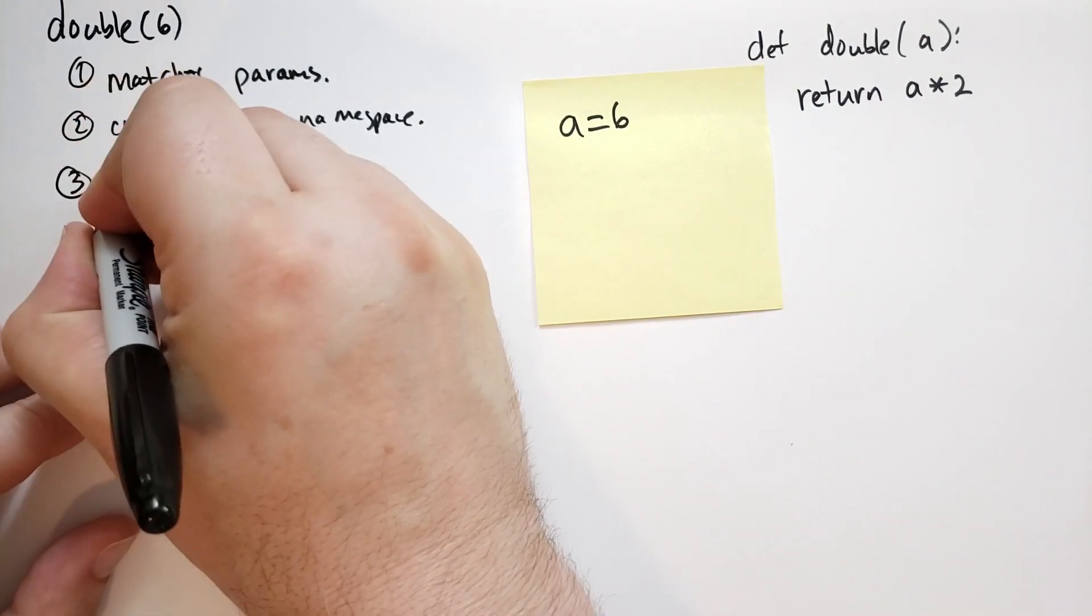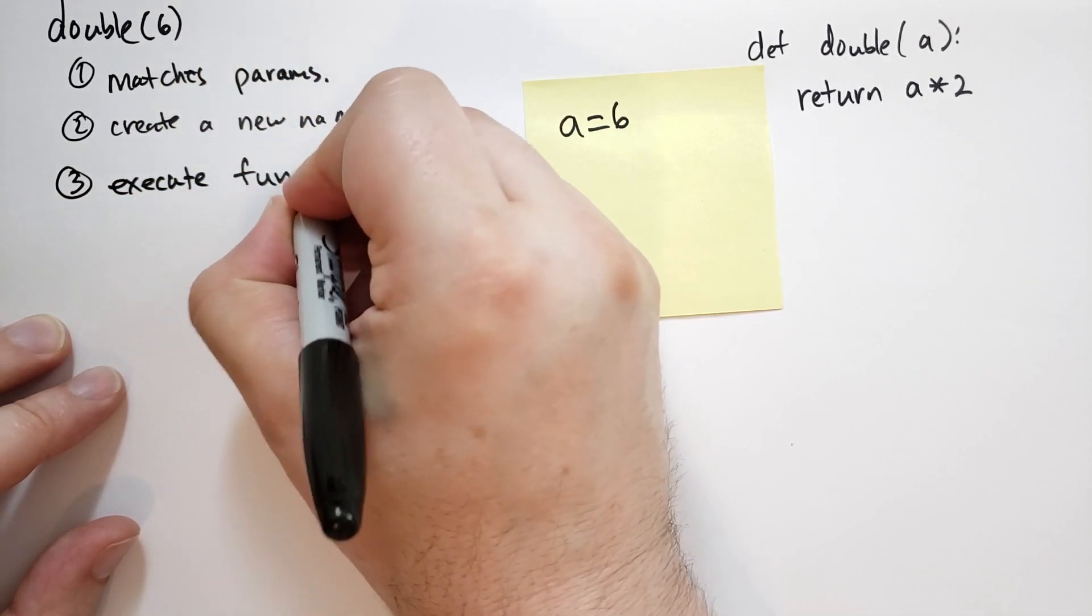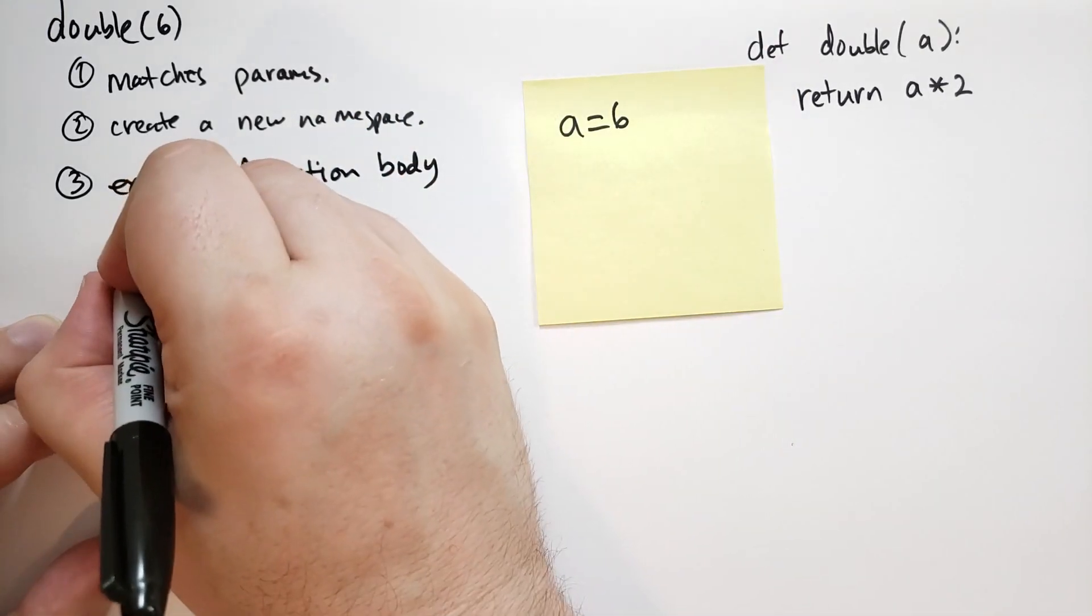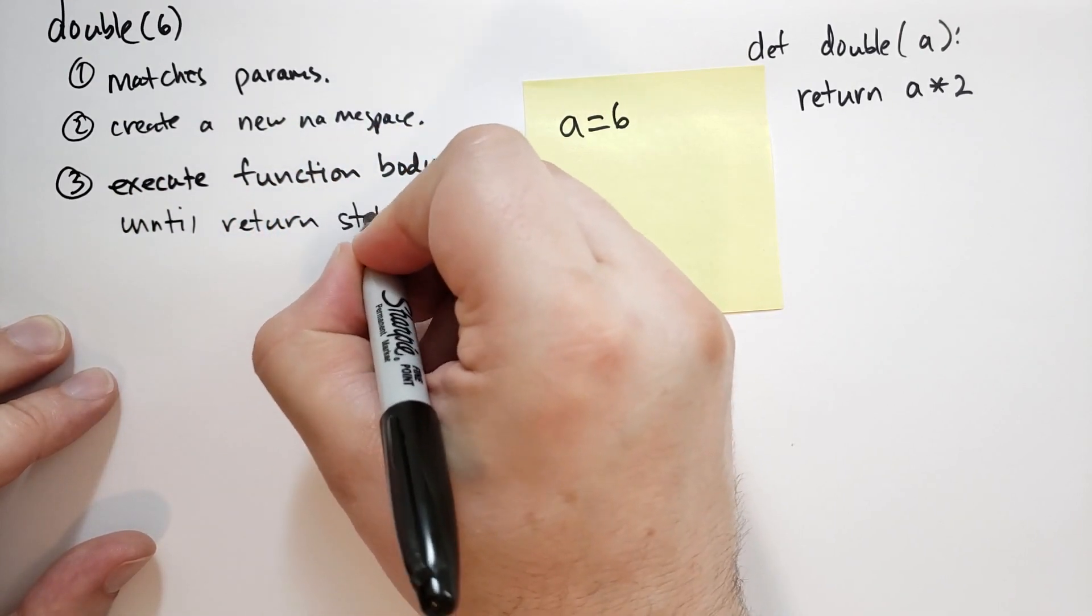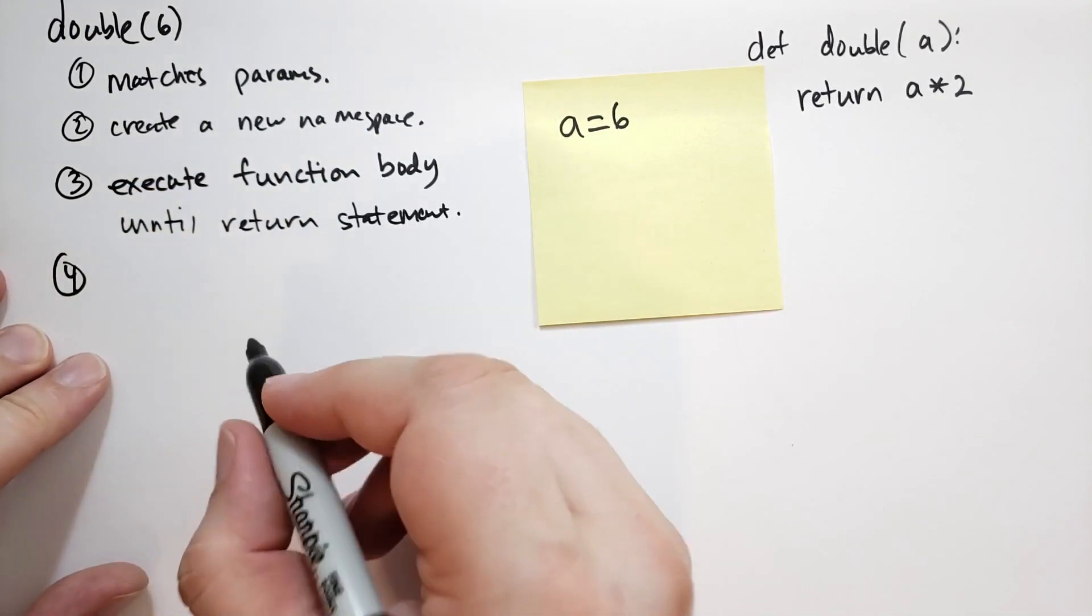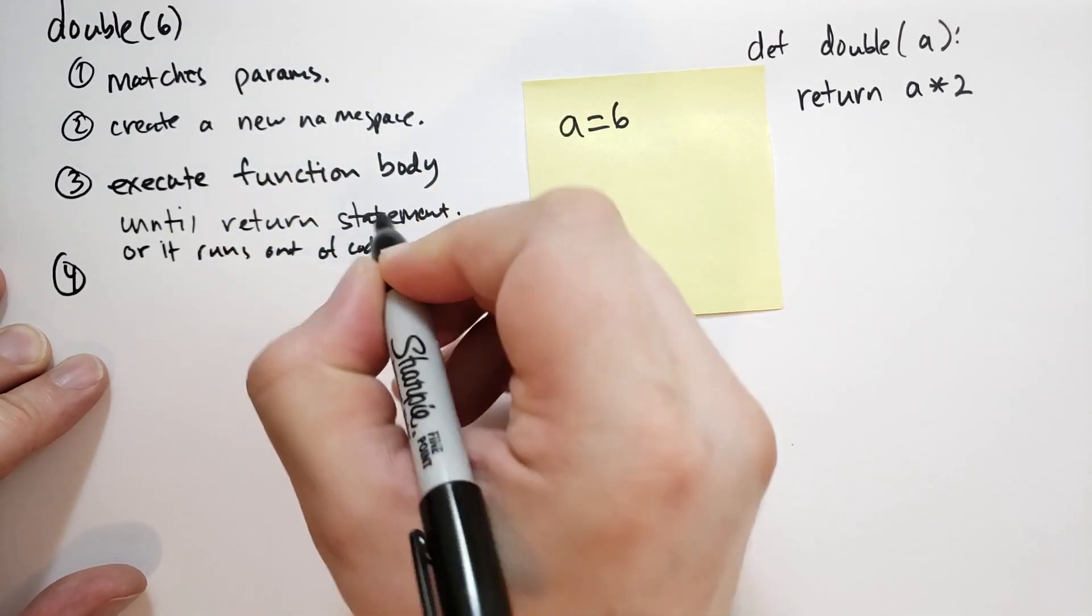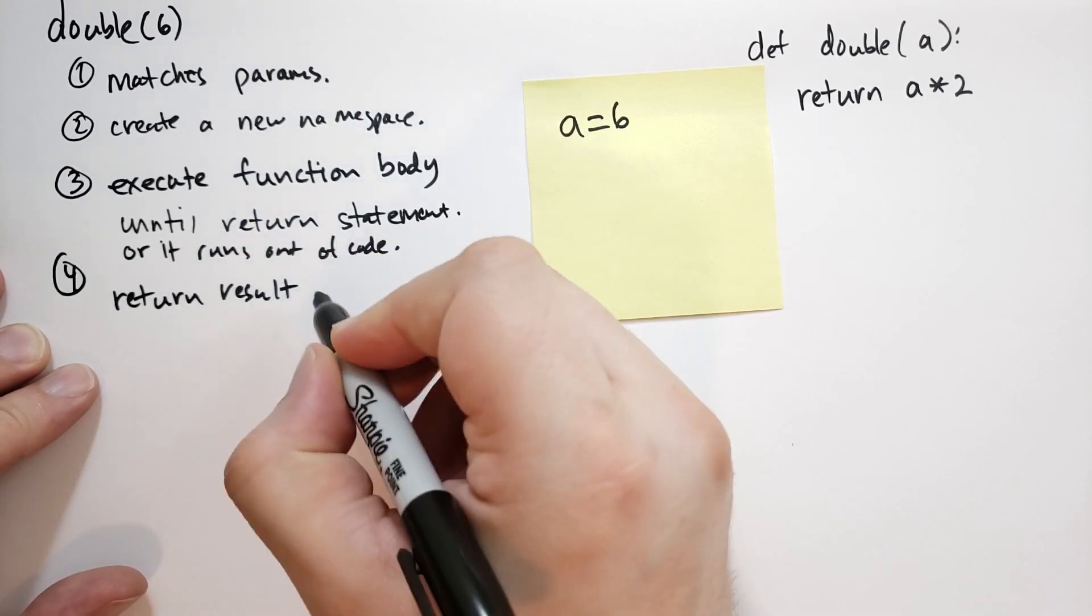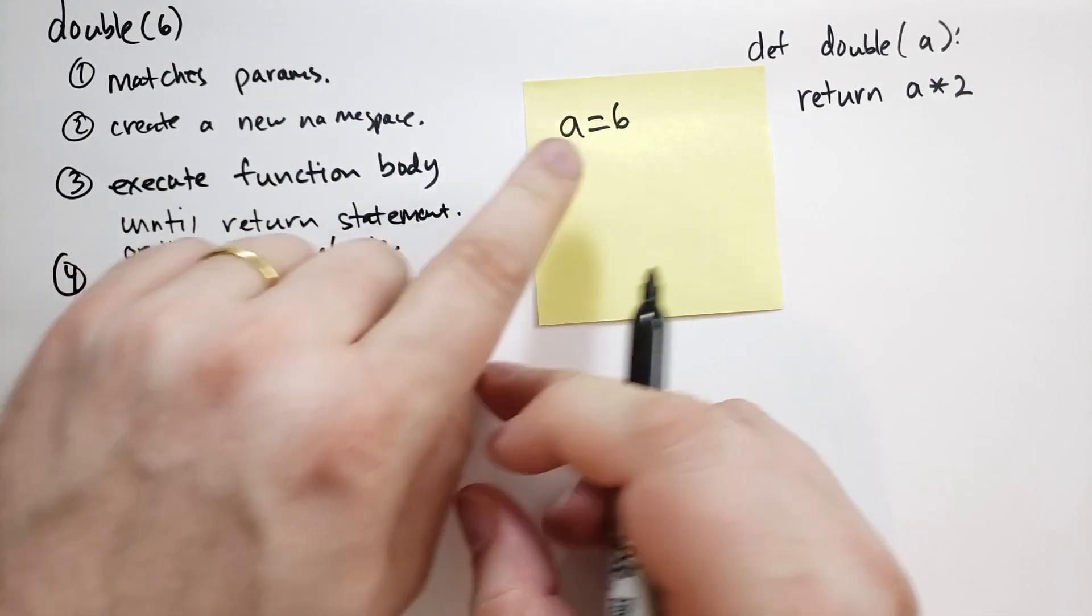Then step three is going to execute the function body. Until it hits a return, or it falls off, runs out of code. And then it's going to return the result, which is going to be none if you don't return anything. So we're going to execute the function body. So the first line of the function body is a statement, and the statement says return, and there's an expression here.